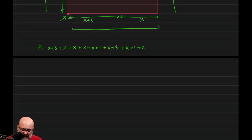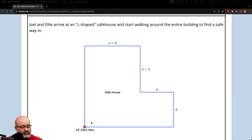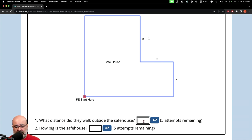Here we just have to combine like terms. We count up the x terms: 1, 2, 3, 4, 5, 6, 7, 8 — so that's 8x. Then the constants: 3 plus 1 is 4, 4 plus 3 is 7, 7 plus 1 is 8. So the distance that they walked outside the safe house — the perimeter of the entire shape — would just be 8x plus 8.